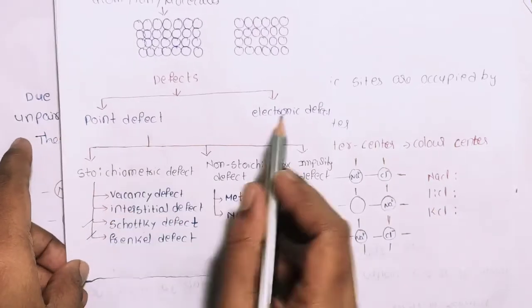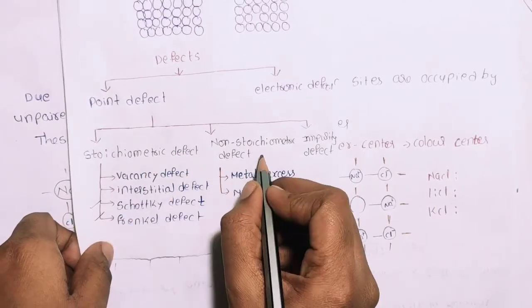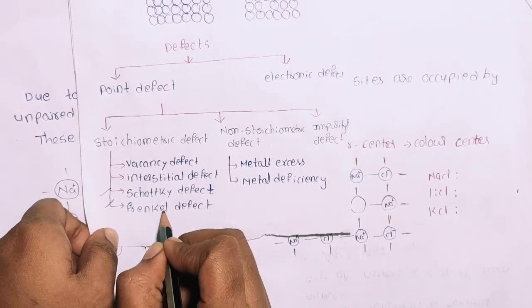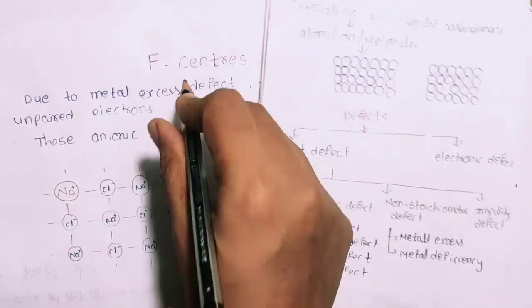The defect is a point defect. It's subdivided into stoichiometric defect, non-stoichiometric defect, and impurity defect. You have Schottky defect and F-center defect. Metal excess defect is called F-center.